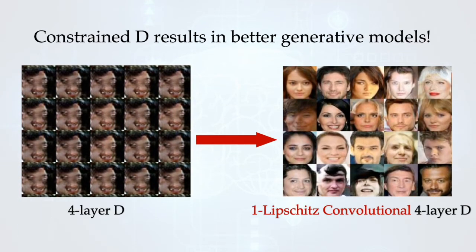However, GANs in practice are trained over a constrained discriminator, and a constrained discriminator results in better generative models. For example, with a four-layer neural network discriminator we don't get good performance, while with a one-Lipschitz convolutional four-layer D the final generated samples look much better. The question is: what is the interpretation of GAN with a constrained discriminator?